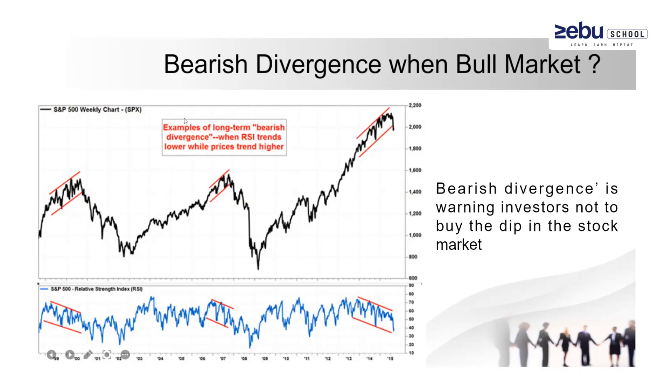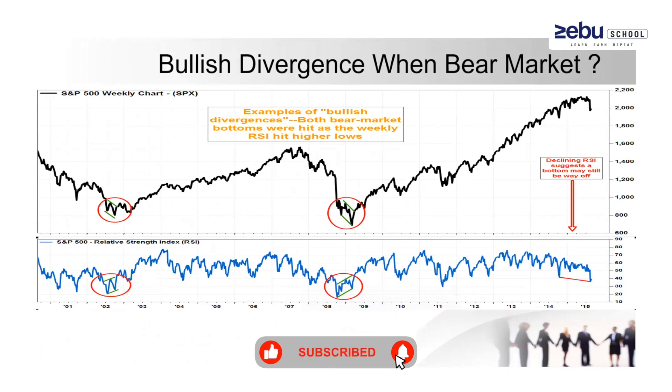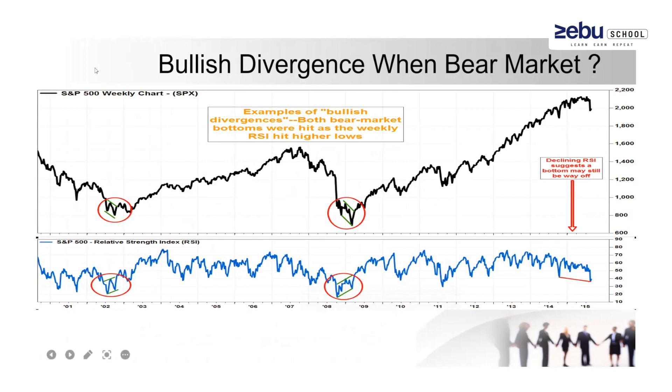Another scenario is bullish divergence in a bear market. If the market is continuously falling, most investors are in a panic condition because the market is giving lower lows. Whenever you find lower lows in price, but the RSI divergence is showing in a bullish mode, these are indications to traders as a warning that the market will be going up in future. People who want to take a fresh buy can accumulate their stocks in this condition.